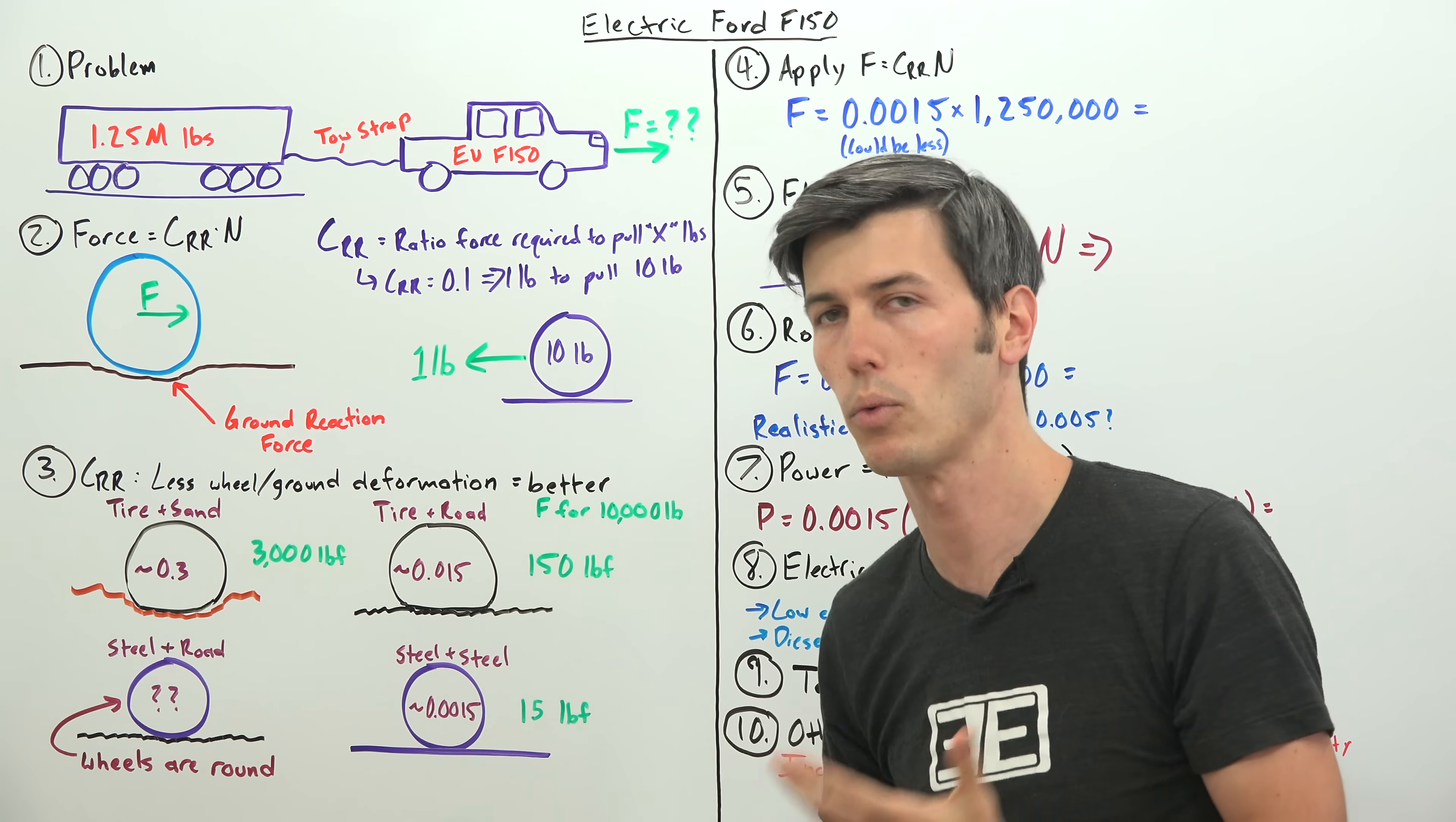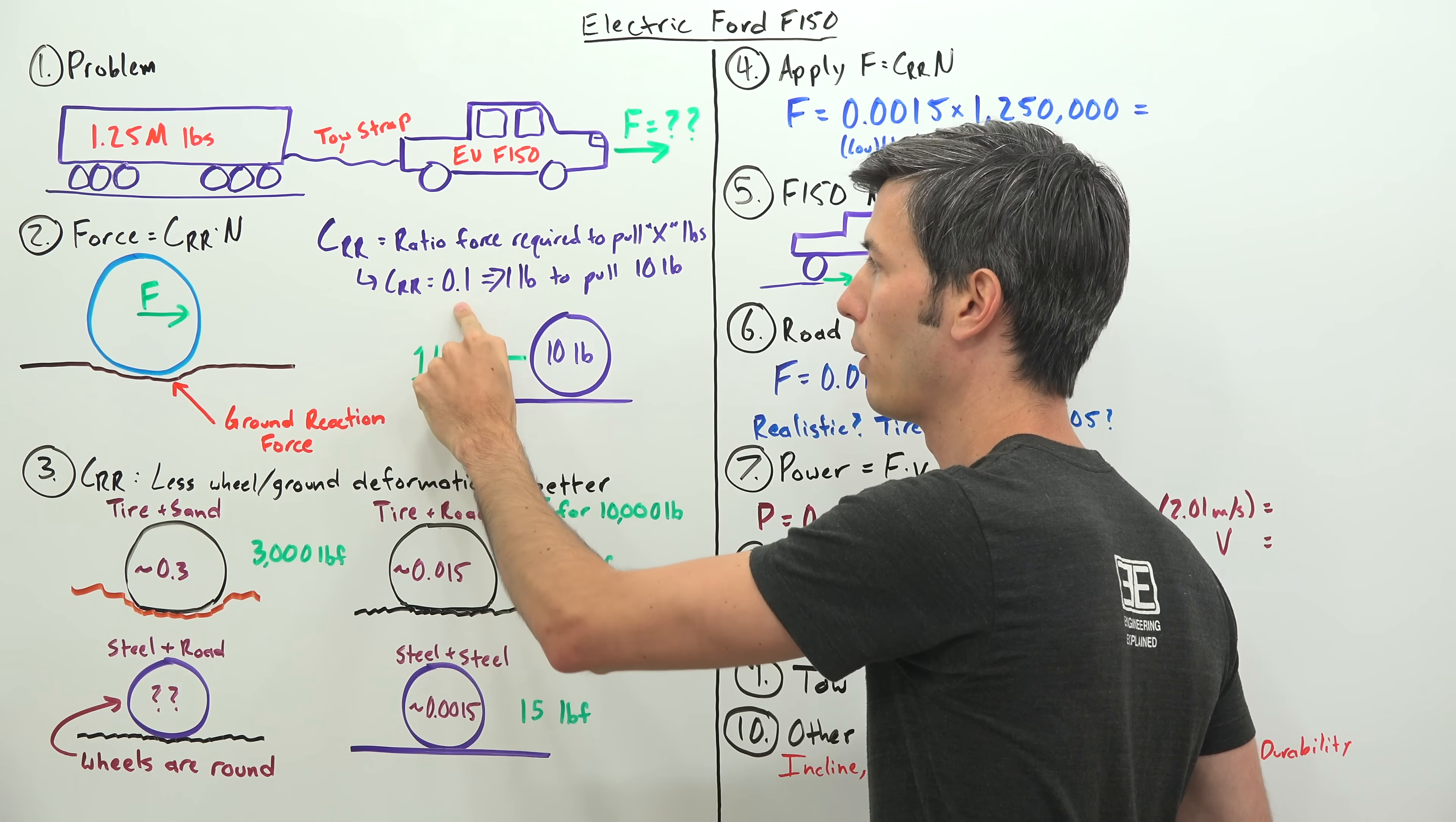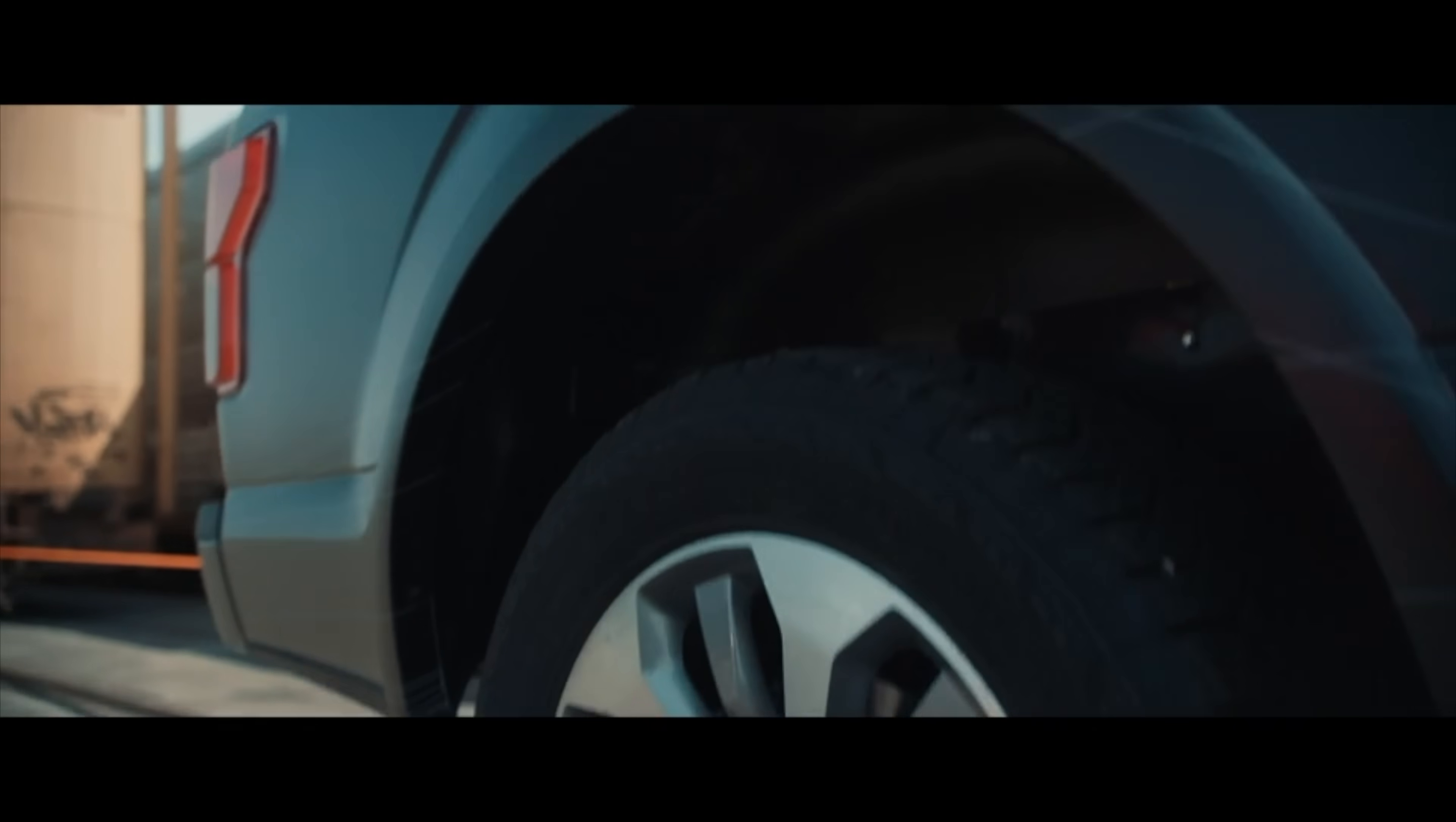The coefficient of rolling resistance is the ratio of the force required to pull a certain amount of weight. For example, if you had a coefficient of rolling resistance of 0.1, it would take 1 pound to pull a 10 pound mass, because your ratio is 0.1. That coefficient plays the critical role in how we can get this load moving.